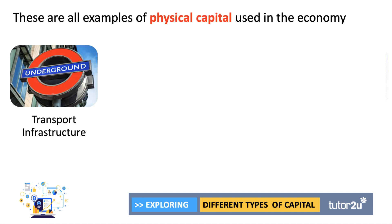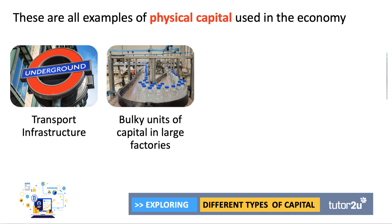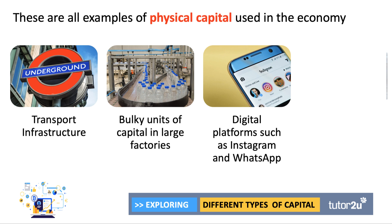Here are examples of physical capital used in the economy: big transport infrastructure including the London Underground, HS2, and Crossrail; investment in large factories allowing mass production; and capital invested in building platforms upon which digital services such as Instagram or WhatsApp can operate.